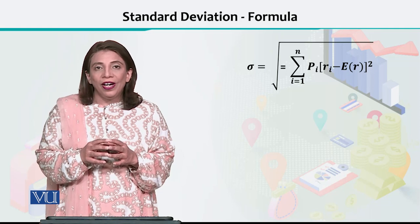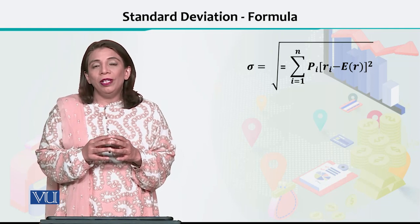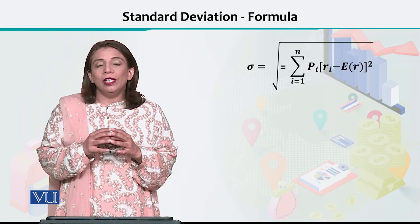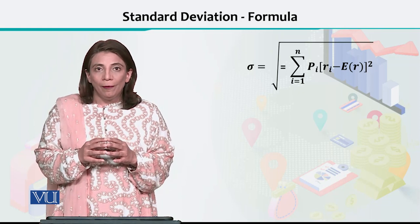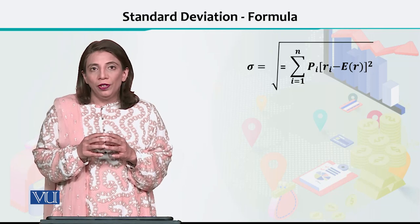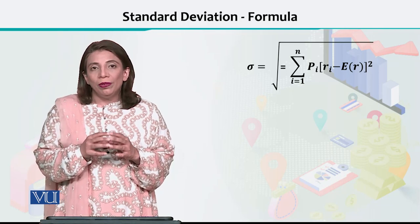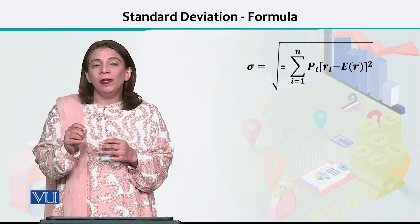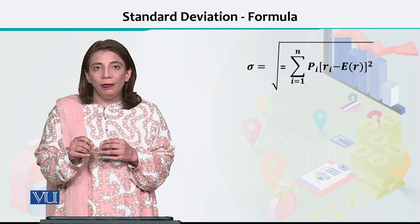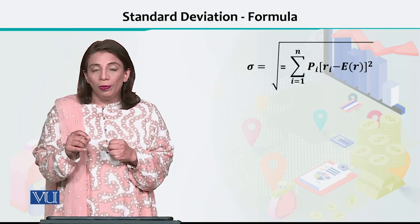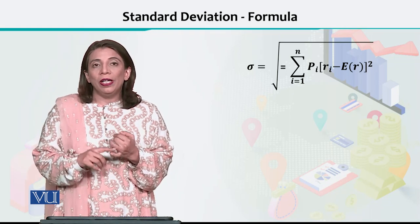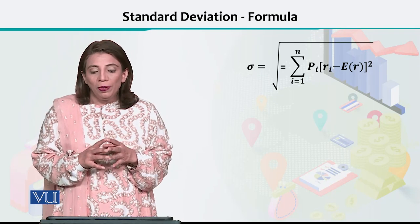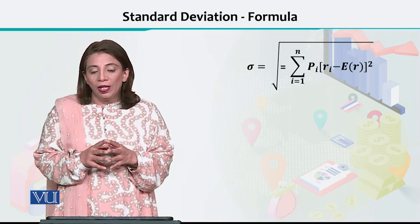And after that, E(R) — as we discussed in a previous section — shows the mean of the expected rate of return, the expected value of rate of return. You can calculate it by hand, with the help of a calculator, or using Microsoft Excel. So you need to have a mean, you need to have probabilities, and you need to have a corresponding rate of return, and then plug it into this particular formula.